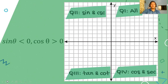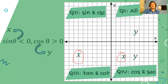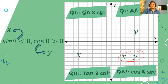Let's have another example. Sine theta is negative and cosine theta is positive. Sine is negative on quadrant three and quadrant four. Cosine is positive on the first quadrant and the fourth quadrant. The intersection of these two conditions is quadrant four. Therefore, the correct answer is quadrant four.